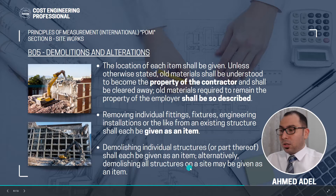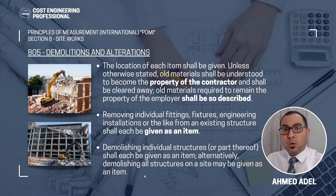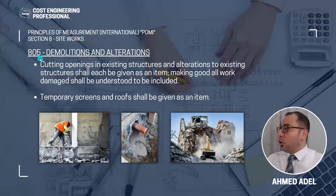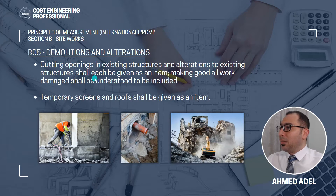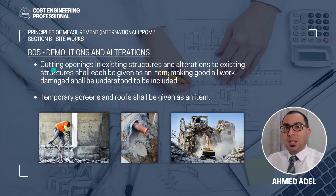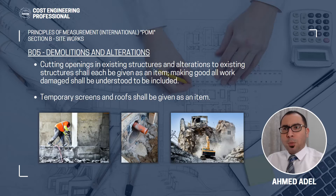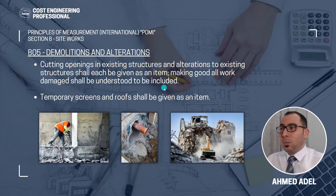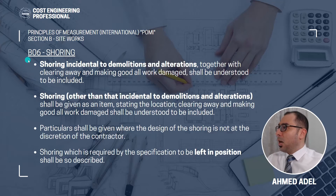Alternatively, demolishing all structures on a site may be given as a single item — for example, if you need to demolish five or six buildings to start your project. Cutting openings in existing structures and alterations to existing structures shall each be given as an item. Making good all work damaged shall be understood to be included in the scope. Temporary screens and roofs shall also be given as an item.